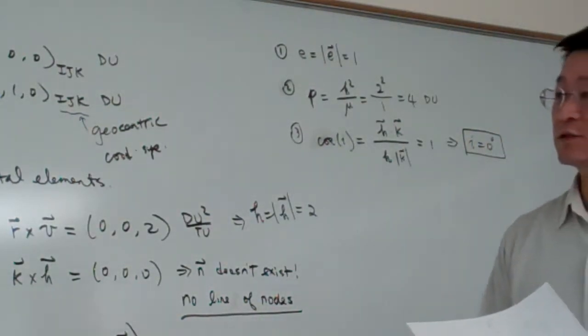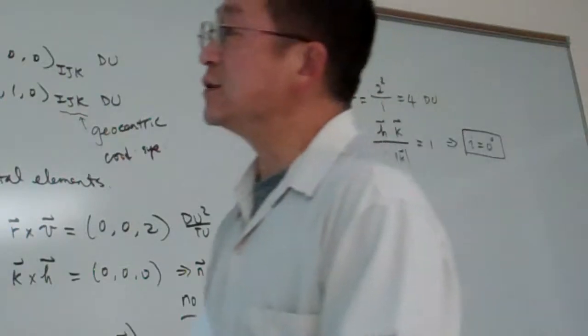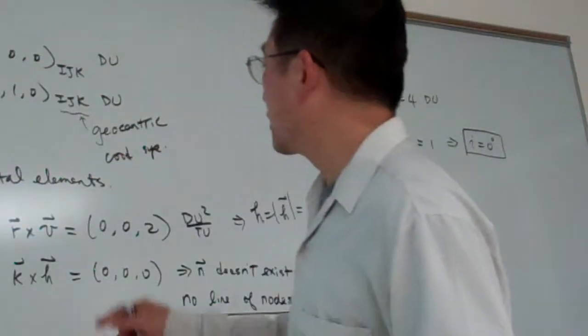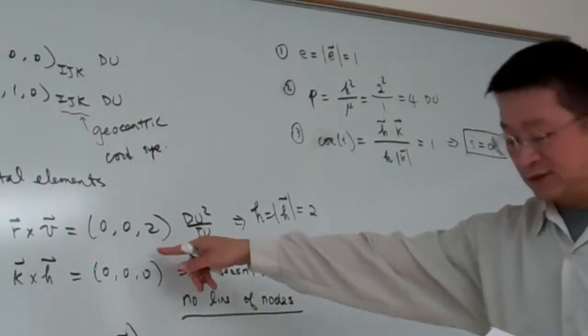Okay, i is 0 degrees. So i is 0 degrees, that means the h is pointing to the k direction. So that apparently, we can see that one here.